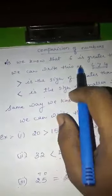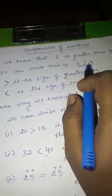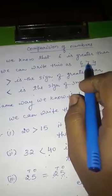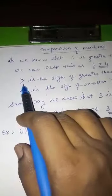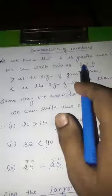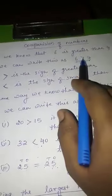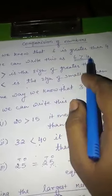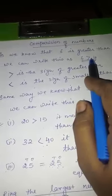Now we can write this as 6 greater than 4. This is the symbol of greater than. This sign is the greater than sign, and this sign is the smaller than sign. Here, 6 is greater than 4, so we put the greater than sign.